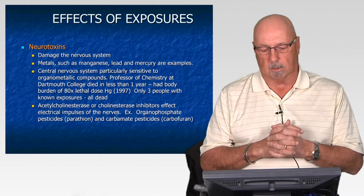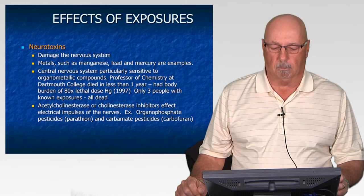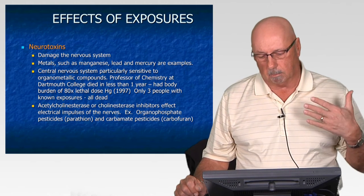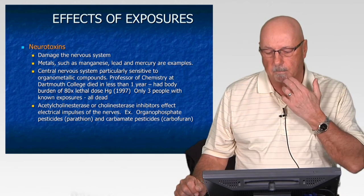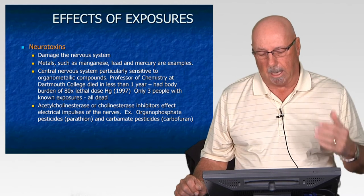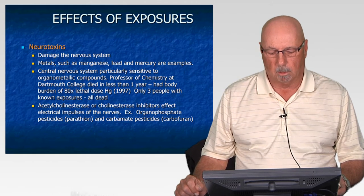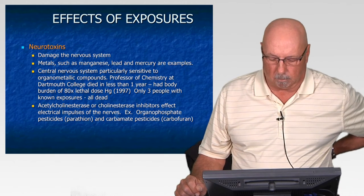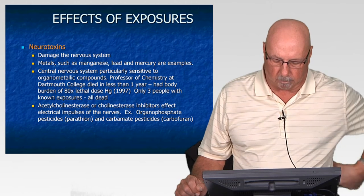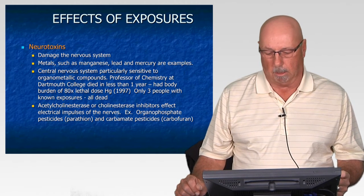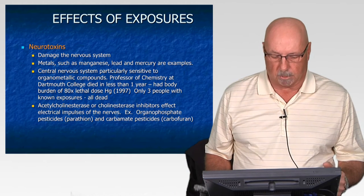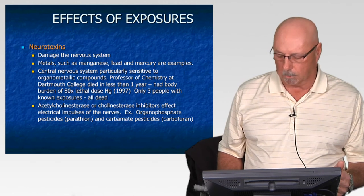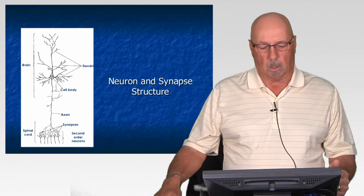A professor at Dartmouth died in less than a year after doing work with organometallic compounds — extremely high levels of mercury were found in his blood system, ultimately resulting in death. Many pesticides such as parathion and carbamates are also examples of neurotoxins.